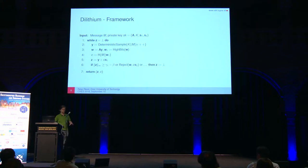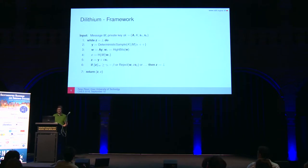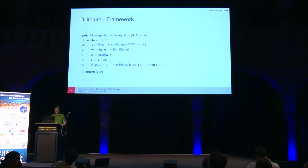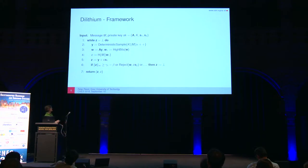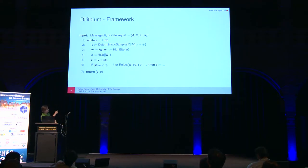In the main Dilithium signing framework, you first sample the nonce Y in a deterministic fashion, multiply it with A, hash it together with the message to get the challenge C, and then compute Z = Y + C·S1. It's a Fiat-Shamir Schnorr-like signature scheme. New to Dilithium and common in many lattice-based signatures is rejection sampling: you test if your output Z follows some distribution, and if it doesn't, you restart the whole signing process. In Dilithium, rejection sampling is essentially a coefficient-wise range check.